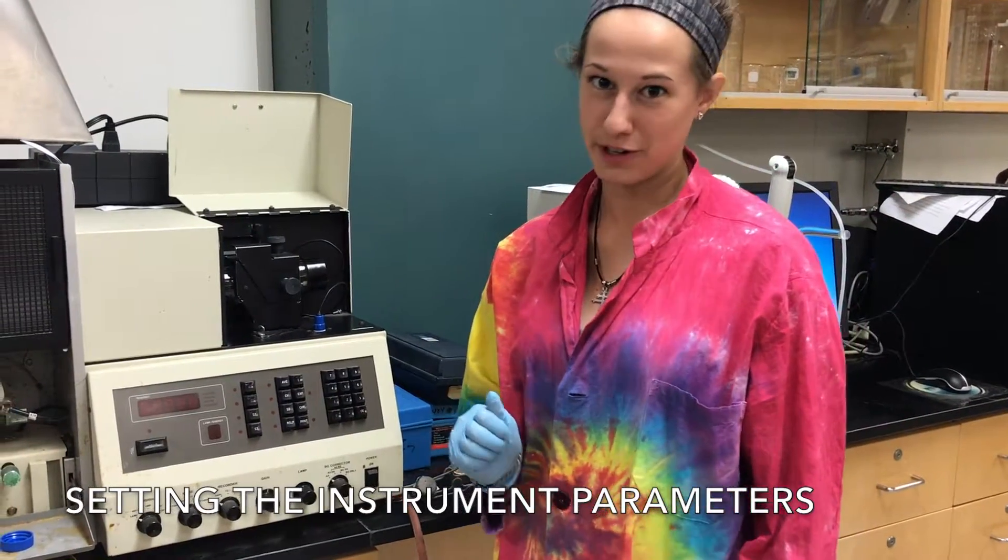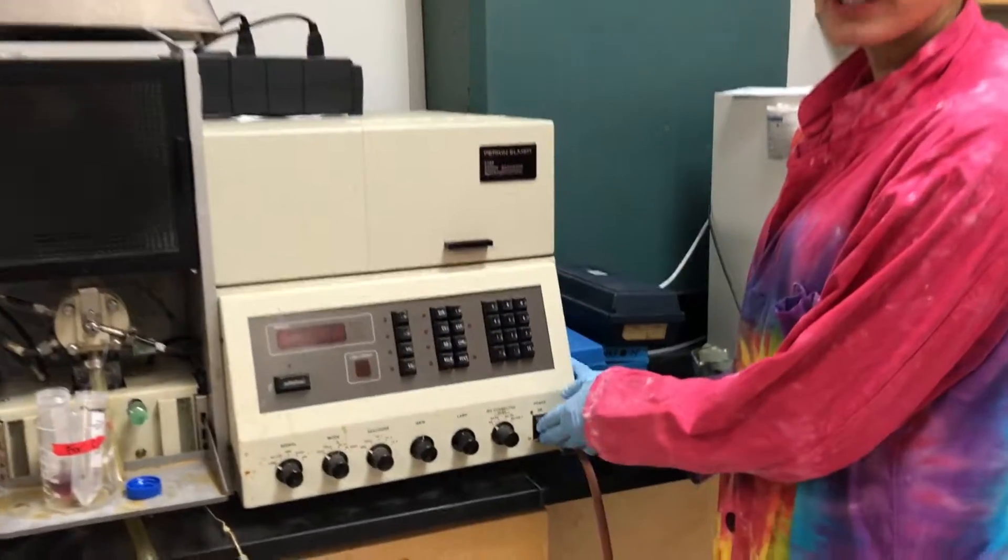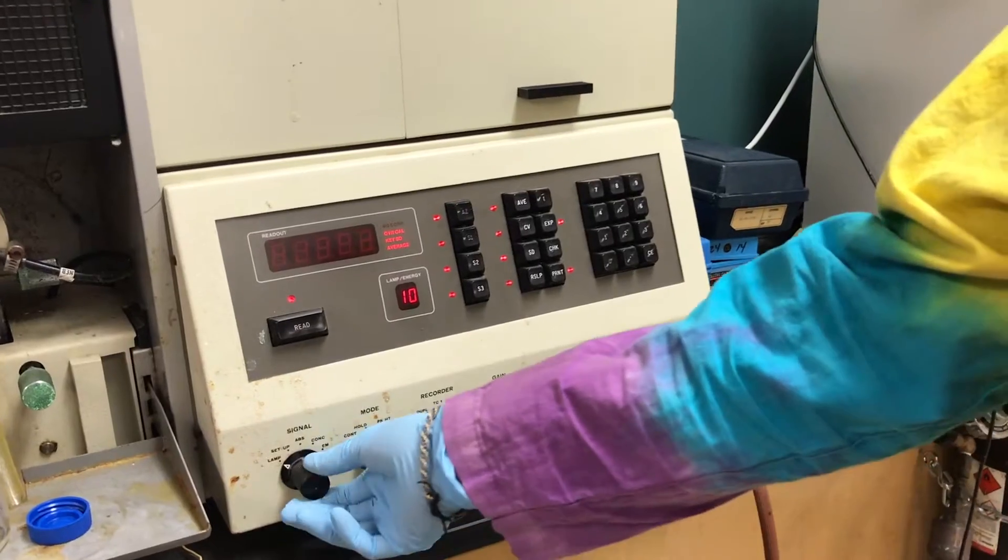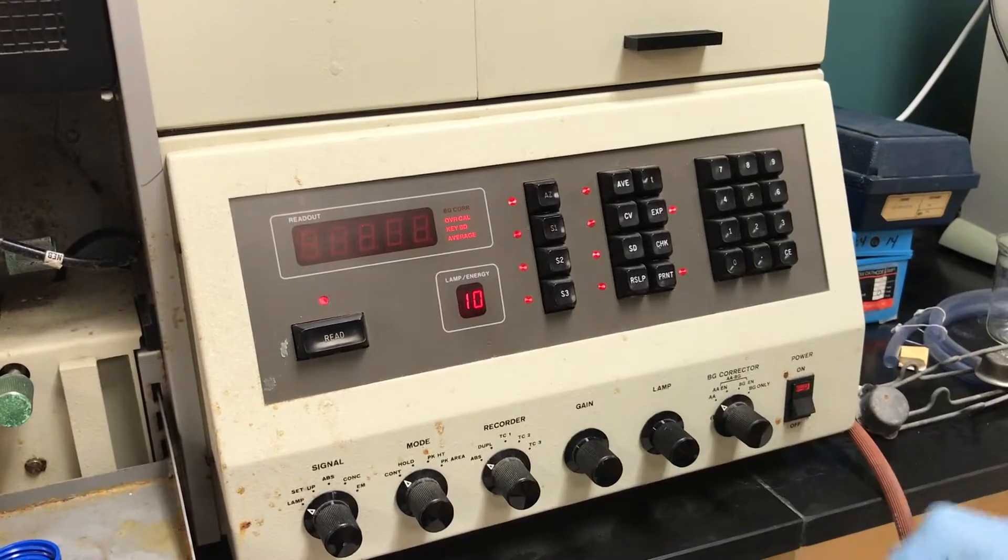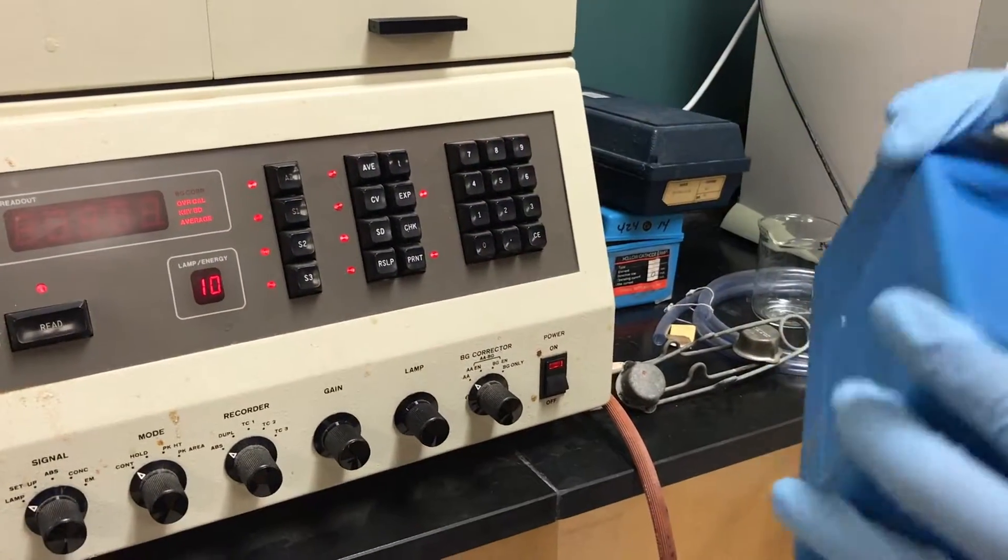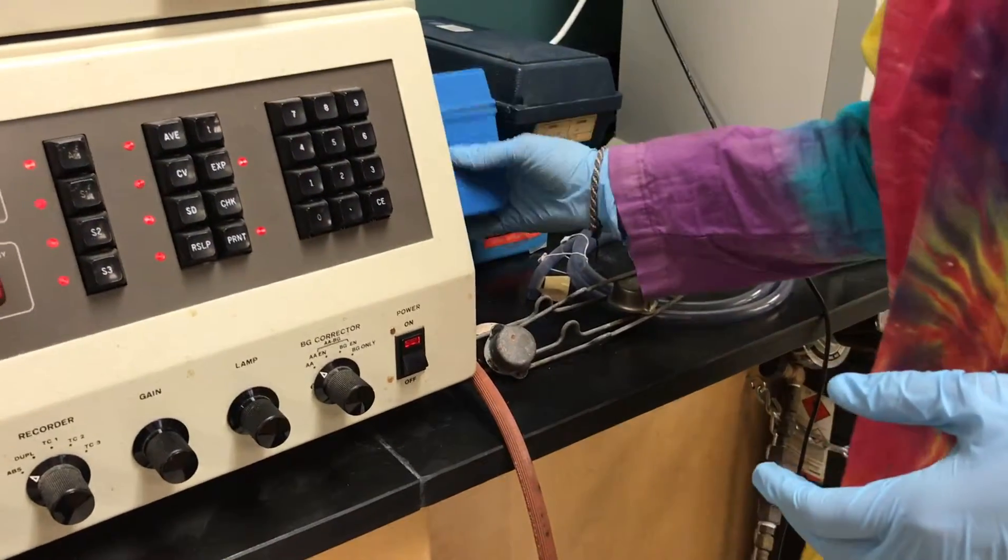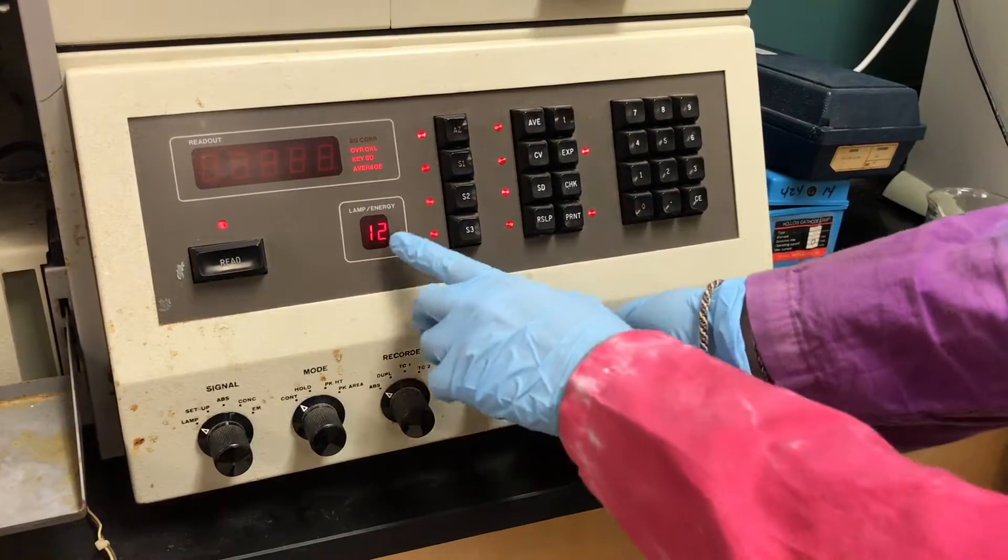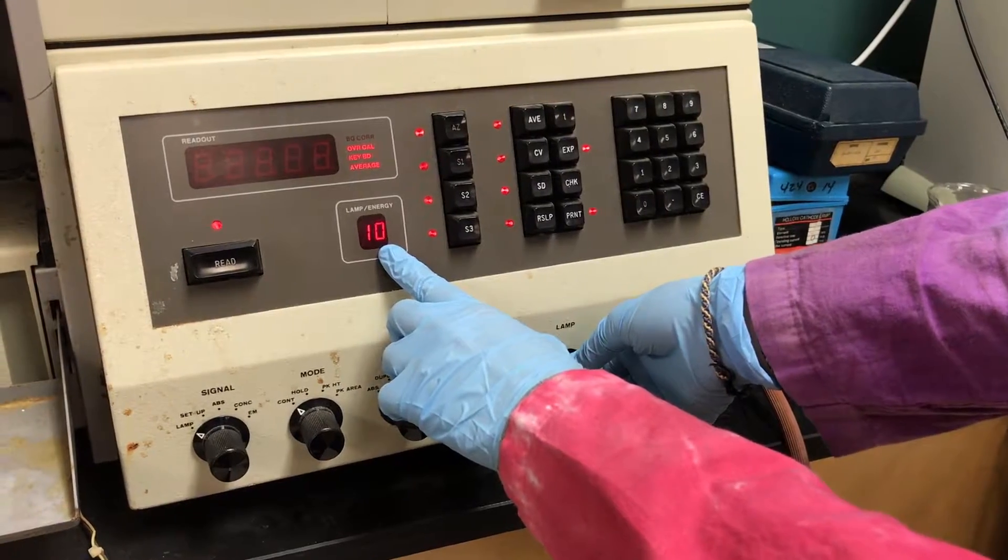Then, take the plug of the lamp and gently insert it right here. Now, we are going to set the parameters for our instrument. Close the lid, turn the instrument on, make sure all the knobs are set to the left. The first thing we need to do is set the current for our lamp. Looking on the box or on the lamp itself, we can find that the current is supposed to be 10 mA. So we're going to slowly adjust the lamp knob until the reading says 10. Like that.